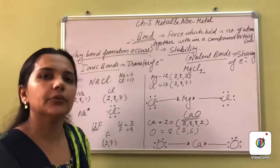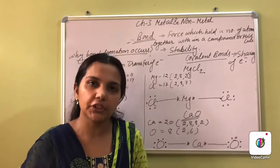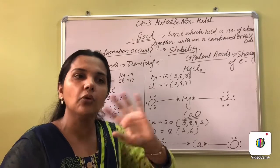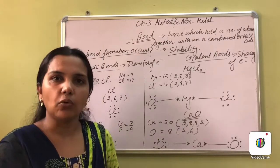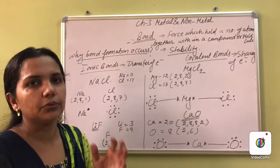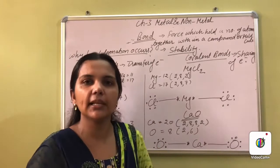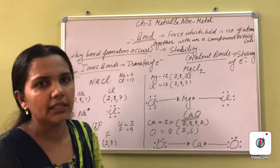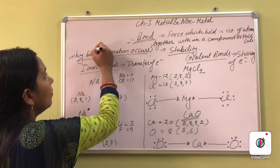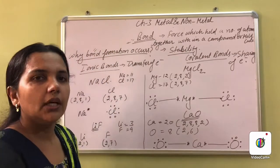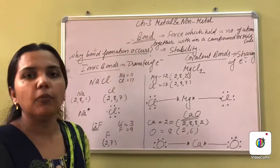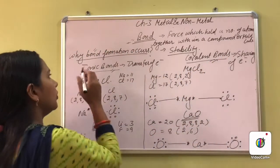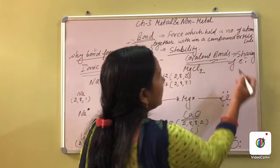A question arises — why does bond formation occur? Only to gain stability, only to make stable the outermost octet of any atom. To gain stability in the outermost octet, bond formation occurs. There are basically two types of bonds: ionic bonds and covalent bonds.